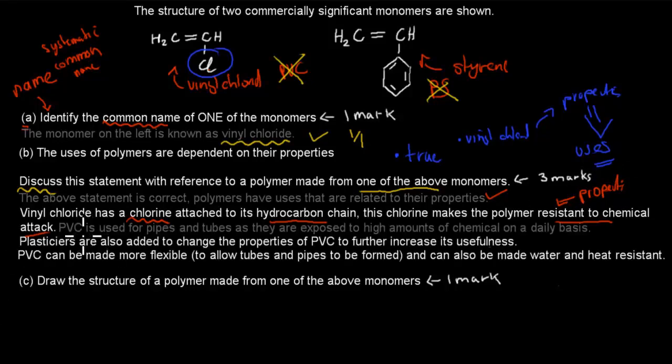And then I relate that resistance to its use. PVC, which is polyvinyl chloride, is used for pipes and tubes as they're exposed to high amounts of chemicals on a daily basis. So by having it chemical resistant, we can make sure that they can survive these high amounts of chemicals that they're exposed to on a daily basis. So that was one of the uses.